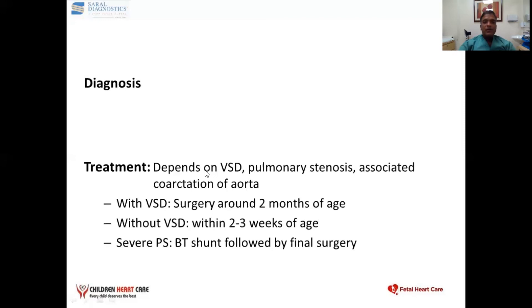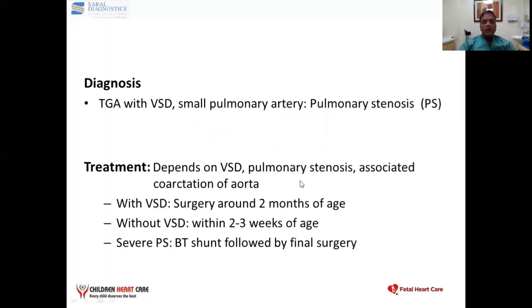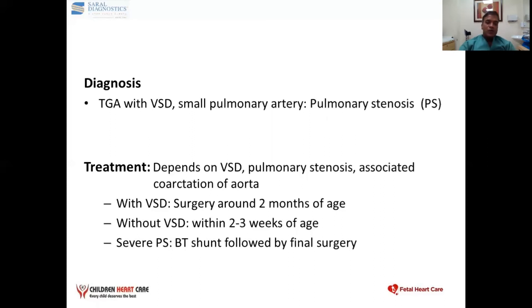Since transposition is clearly diagnosed, the treatment is only surgery after birth. But during the course of pregnancy, we have to assess whether the ASD is decreasing in size, because sometimes the ASD decreases during pregnancy and we have to intervene immediately after birth. If the ASD is of adequate size and the pulmonary artery is of adequate size, we can operate around 2 months of age given the large VSD.